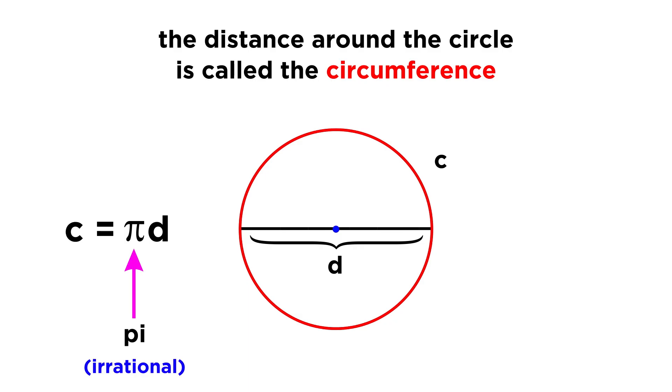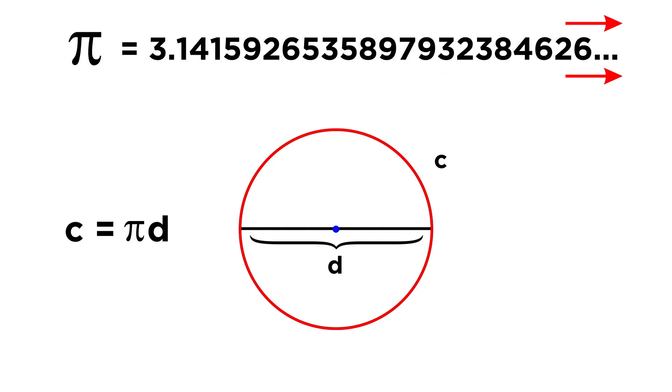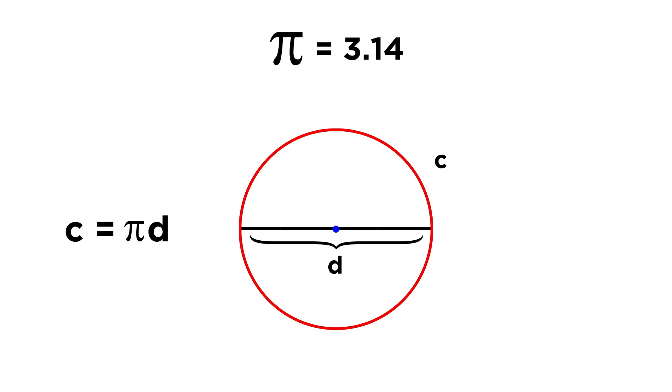This is an irrational number, which as we discussed before, is a number that can't be expressed as the ratio of two integers. This means that it has a decimal representation with digits that go on forever, without any kind of repeating pattern. While this is sufficiently mind-boggling when you think about it, for our purposes, we can just estimate pi as being 3.14, as that will give us values that are precise enough to be meaningful.